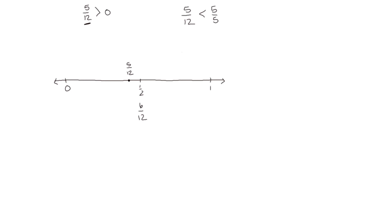What about seven eighths? Well, I know seven eighths is greater than zero, and I know that it's less than one. But I know eight eighths is one, so seven eighths is pretty close to having everything. So seven eighths would probably be somewhere around here.